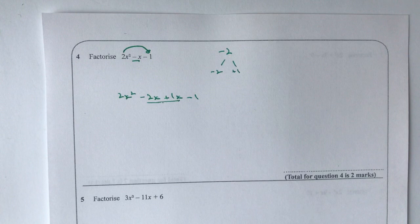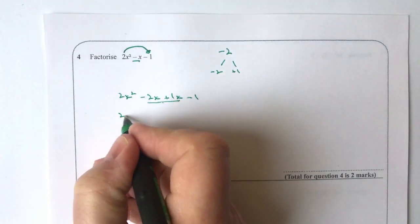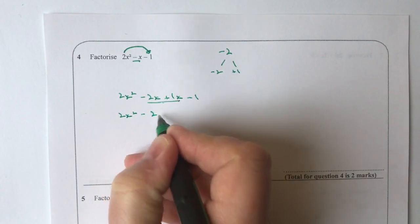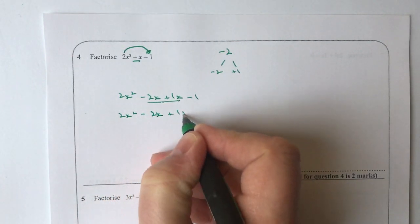Okay, so when you've written that out, what you need to do then is look at the first two terms and factorise them, and then the second two terms and factorise those. So let's write it out again: I've got 2x squared minus 2x plus 1x minus 1.